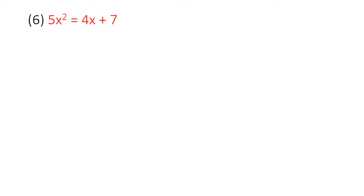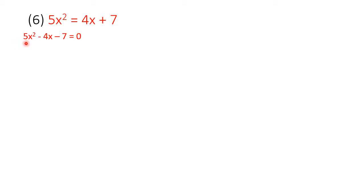After this we come to the last sum of the exercise — the sixth one. Here, firstly the sum is not in the form of ax squared plus bx plus c, so we are going to arrange it first. 5x squared remains. The 4x comes to the left hand side as minus 4x, and plus 7 becomes minus 7. We also see that a is not 1 — a is 5 — so we divide the entire equation by 5. This cancels the 5, giving x squared minus 4 upon 5 x minus 7 upon 5.